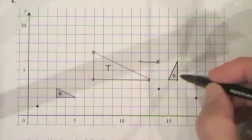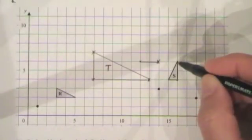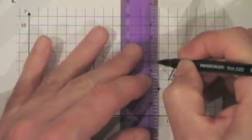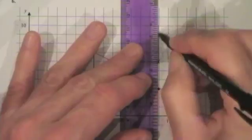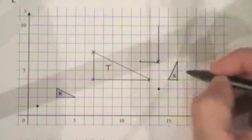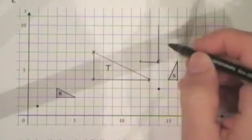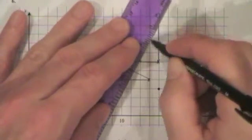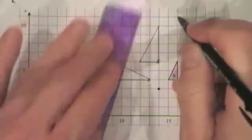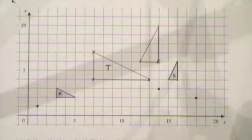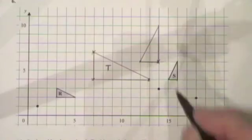In the original shape it goes two up, so with a scale factor of two the enlarged shape goes four up. I don't need to worry about the diagonal because if I've got two sides of a triangle the third one is just joining the ends together. That's the enlarged shape, and the question tells me to label it U.